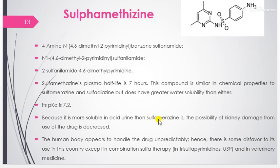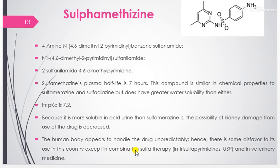Because sulfamethazine is more soluble in acid urine than sulfamerazine, the possibility of kidney damage from use of the drug is decreased. However, the human body appears to handle the drug unpredictably, hence there is some disfavor to its use except in combination sulfa therapy, in trisulfapyrimidine USP, and in veterinary medicine.